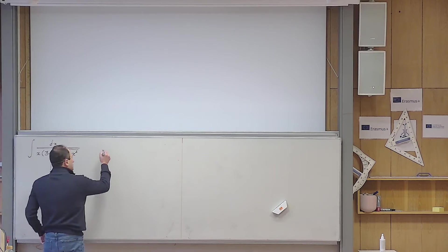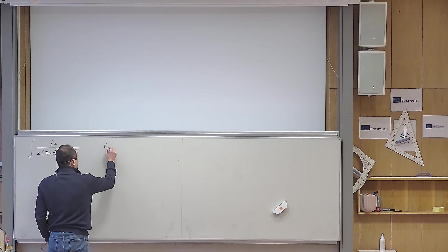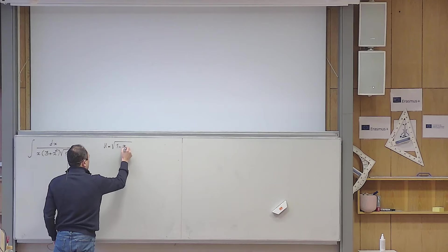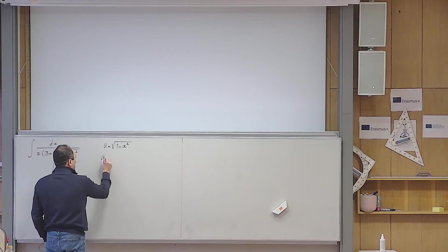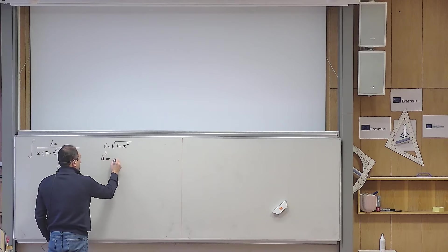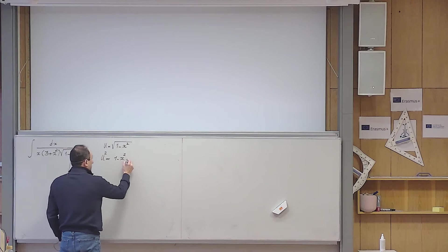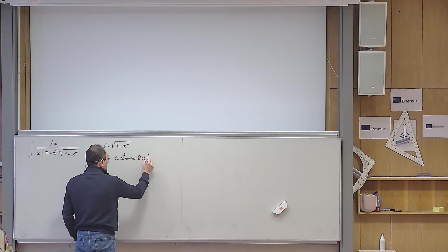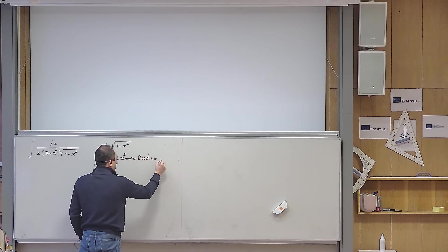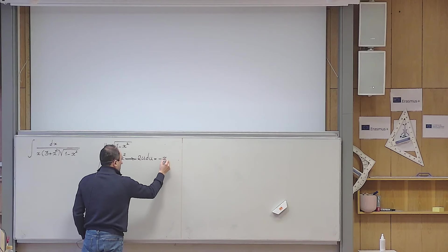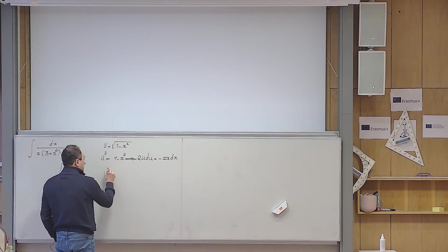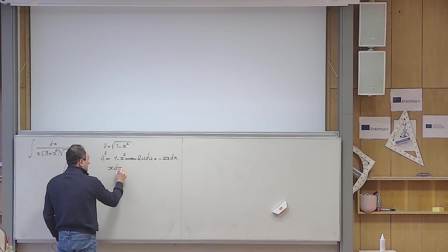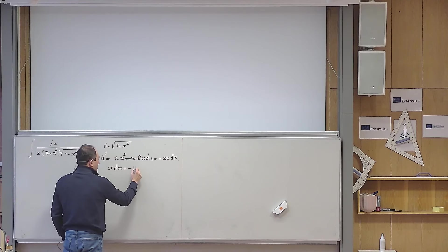So I introduce a new variable u which is the square root of 1 minus x squared. Then I raise both sides to power 2, so it becomes u squared equals 1 minus x squared. Then I differentiate both sides: 2u du equals minus 2x dx. Then I divide everything by minus 2, so what I get is x dx equals minus u du.